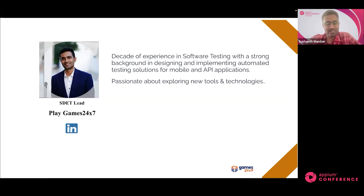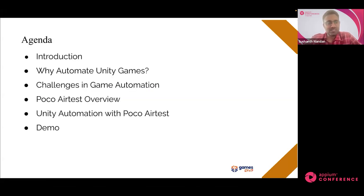In today's session, we'll be covering: what is Unity, why we need automation on Unity applications, what are the challenges faced in automation, what are the benefits of automating game applications, what is PocoAireTest, and how using PocoAireTest we are able to achieve Unity automation. Finally, a demo on a real-time application, RummyCircle, covering an end-to-end scenario automating the Unity layer of the application.